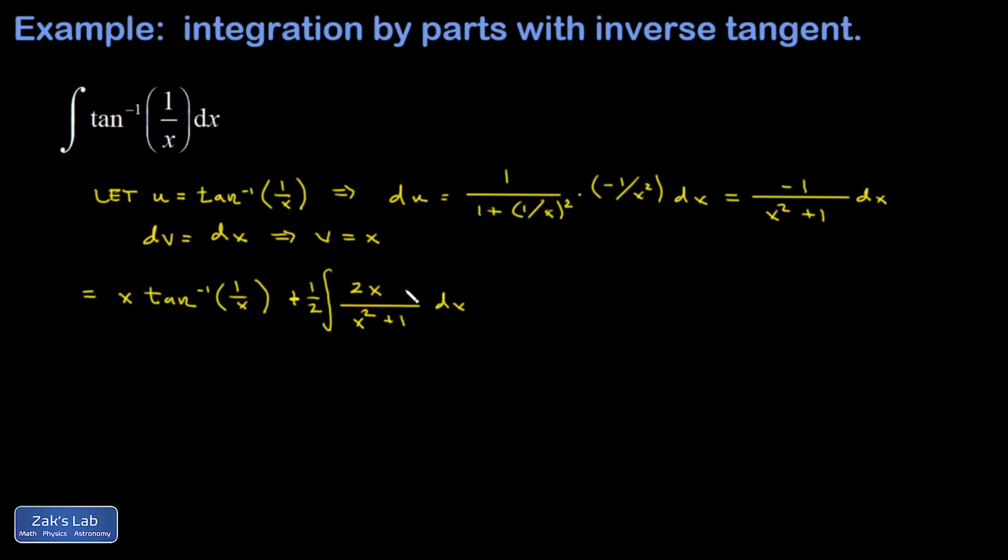The general formula here requires that we put absolute value bars around the argument of the log function, but I notice that x squared is always positive, so x squared plus 1 is always positive, so we don't have to do it. Finally, we tack on a plus c so that we have the general antiderivative, and we're done.